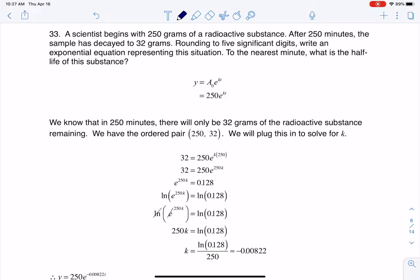Hey, MAD31, I had a question coming out of section 6.7, number 33. Here we were told that a scientist starts with 250 grams of some kind of radioactive substance, and then after 250 minutes, we only have 32 grams.